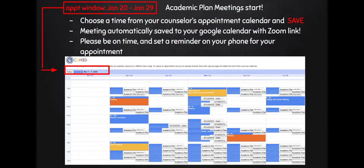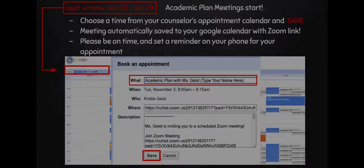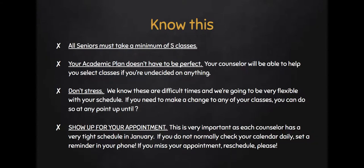It's important that you are on time and that you set a reminder on your phone for your appointment, and that you do not miss this appointment. Remember that our appointment window starts today January 20th and runs until January 29th. Once you click on an academic planning appointment slot, you will see a page come up — go ahead and type in your name where it says 'Type your name here.' There will be a Zoom link ready to go for you as well. Hit Save, and once you hit Save it saves it into your Google Calendar.